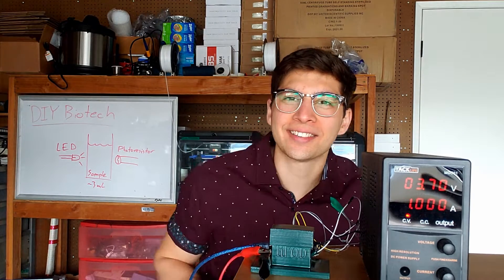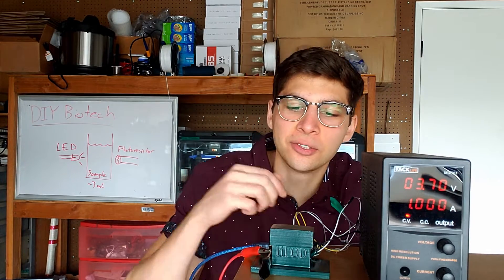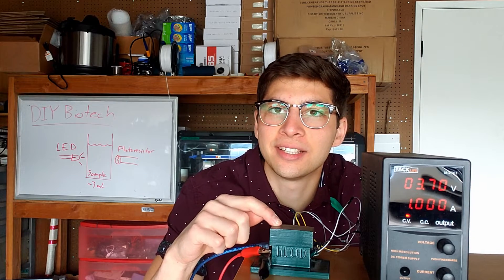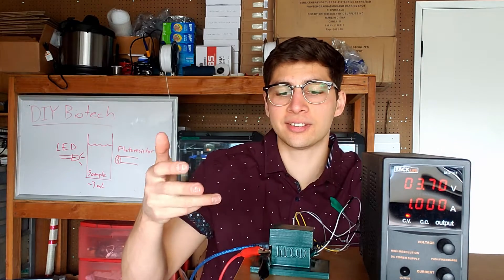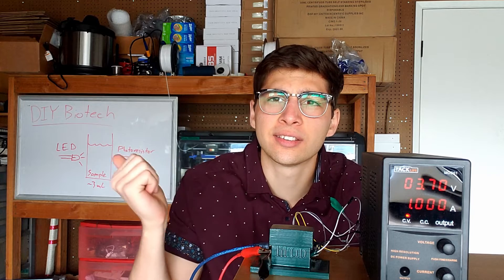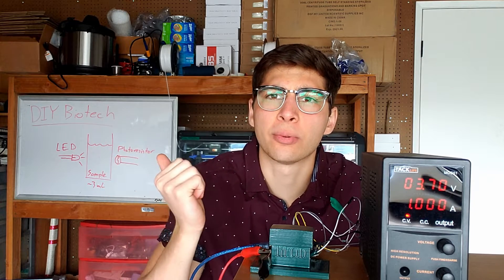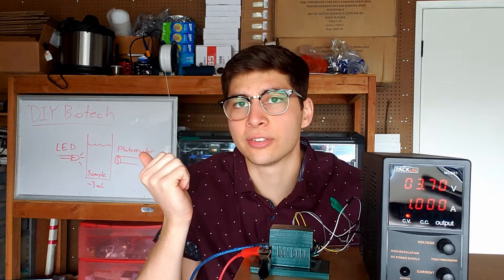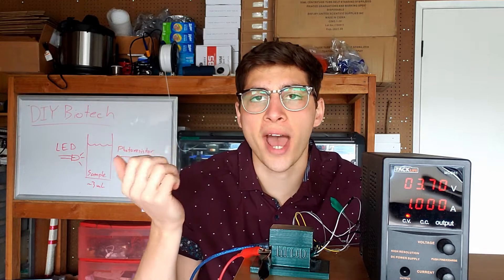So the slightly less accurate solution to measuring our solutions is to use something called an optical density meter. This is a really simple device and all it does is pass light through a sample with a little sensor on the other side that tells you how much light passed through the sample.